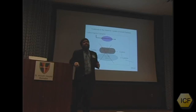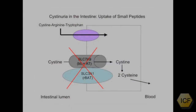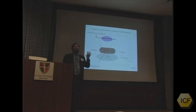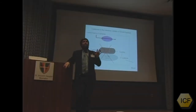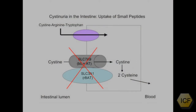In the small intestine, the same cysteine transporter is present, but it doesn't appear that cysteine transport in the intestine is so critical. The reason why is because small peptides — small groups of amino acids — for example, cysteine, arginine, and tryptophan strung together into a little tiny chain — this would be called a tripeptide — can be reabsorbed through peptide transporters.